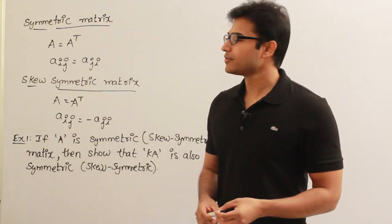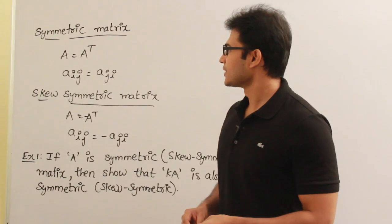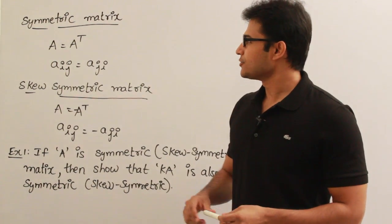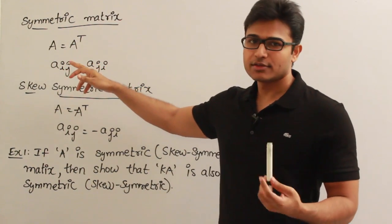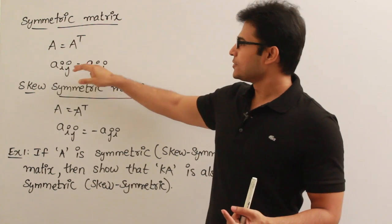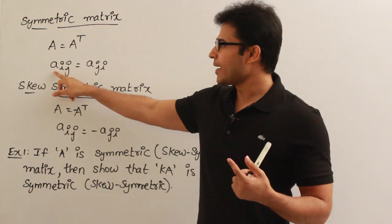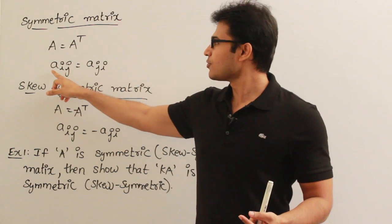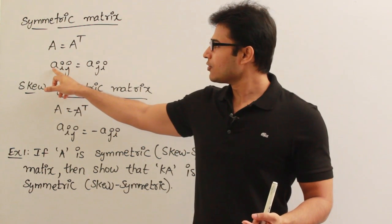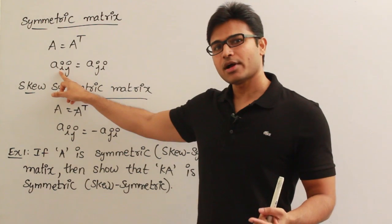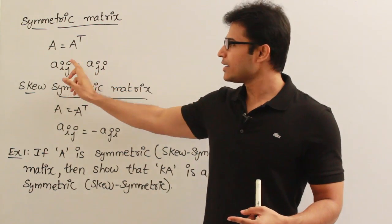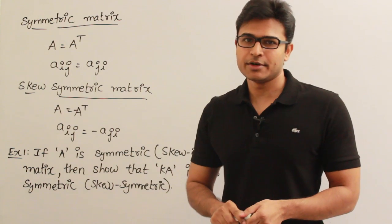Based on the definition of transpose, we can define symmetric and skew-symmetric matrices. If a matrix is equal to its transpose, then it is called a symmetric matrix. So, if A equals A transpose, then A is called a symmetric matrix. Another way of writing it: if each element of matrix A is written as aᵢⱼ, where i is the row and j is the column, and aᵢⱼ equals aⱼᵢ for all i and j, then it is called a symmetric matrix.